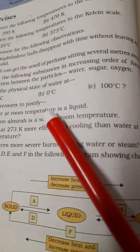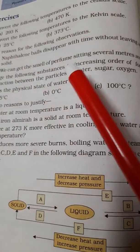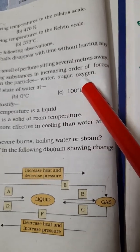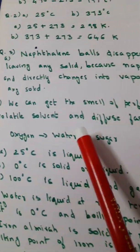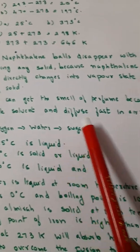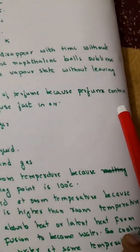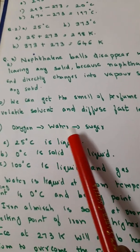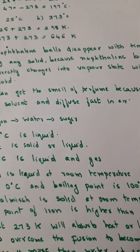So naphthalene balls directly change into vapor state. Now this is a very common question: we can get the smell of perfume sitting several meters away. Because of diffusion, because the molecules will diffuse. We can get the smell of perfume because perfume contains volatile solvent that diffuses very fast in air.